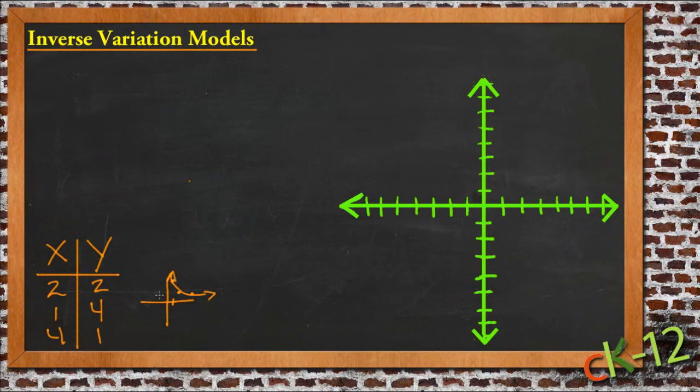Because the function itself looks like y equals something, usually we use k for constant proportionality, over x. So as x gets bigger, y ends up having a single number that's divided by a progressively bigger and bigger number. So y gets smaller.